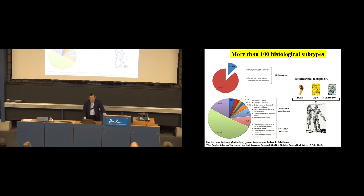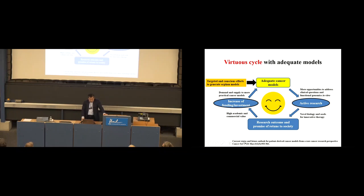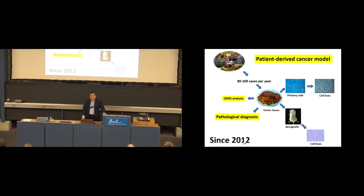We definitely need more cell lines. At that time, I recognized a vicious cycle in rare cancer research: because we cannot obtain enough clinical materials, we do not have cancer models; without cancer models, we cannot conduct experiments; so we cannot expect good research outcomes; nobody provides research funding; and therefore nobody creates new cancer models. We need to break this cycle. If we start establishing new patient-derived cancer models, more researchers will study rare cancers, more investment will follow, and someone will create new models.